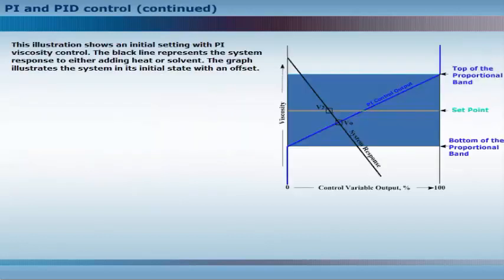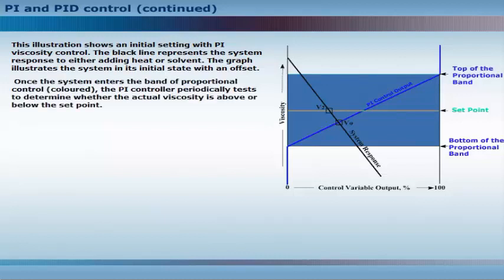This illustration shows an initial setting with PI viscosity control. The black line represents the system response to either adding heat or solvent. The graph illustrates the system in its initial state with an offset. Once the system enters the band of proportional control, the PI controller periodically tests to determine whether the actual viscosity is above or below the set point.